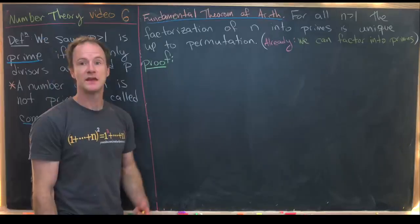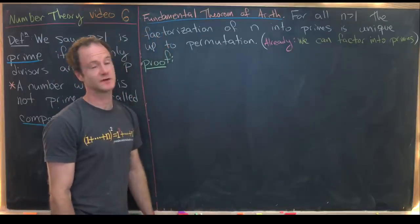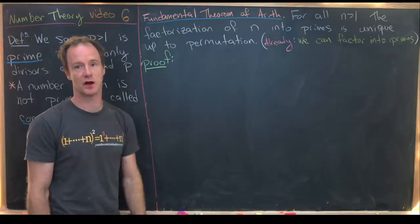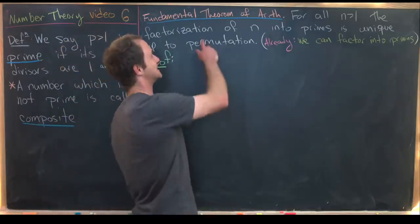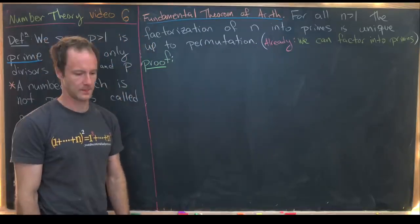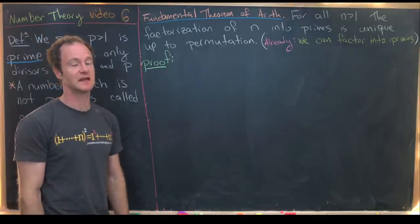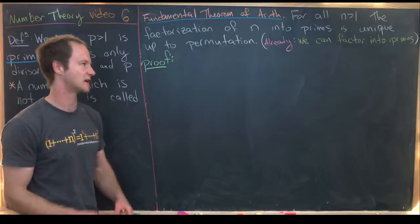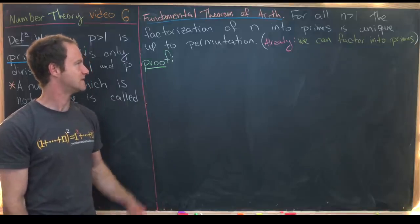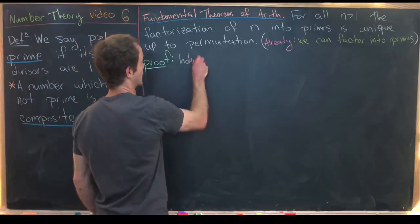Now we're ready to tackle the Fundamental Theorem of Arithmetic. We've already shown that natural numbers bigger than 1 can be factored into primes. All that's left is to show that factorization is unique up to permutations — meaning permuting the prime factors. For example, 15 can be factored as 3 × 5 or 5 × 3, but those are the same up to permutation.